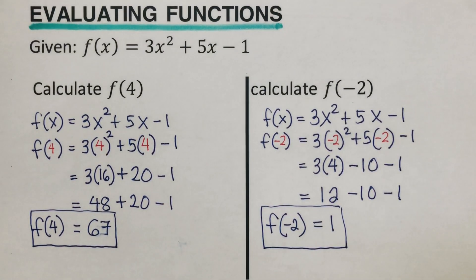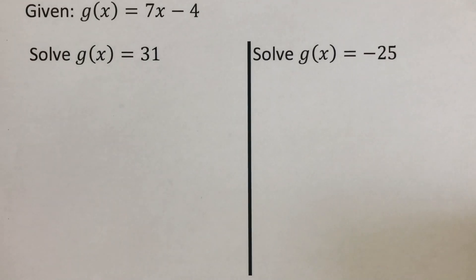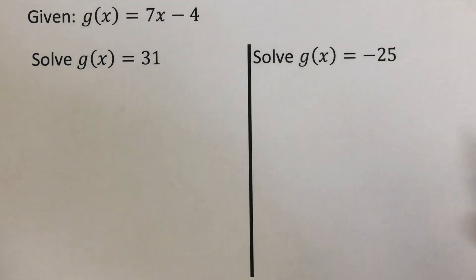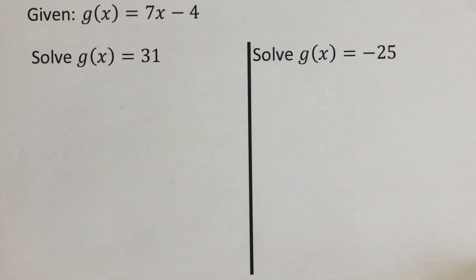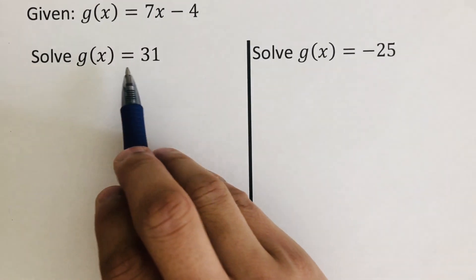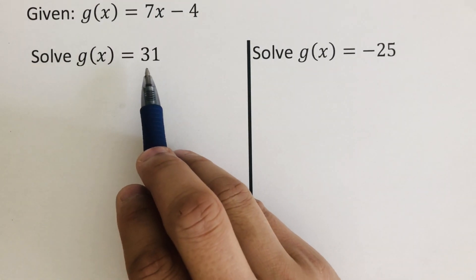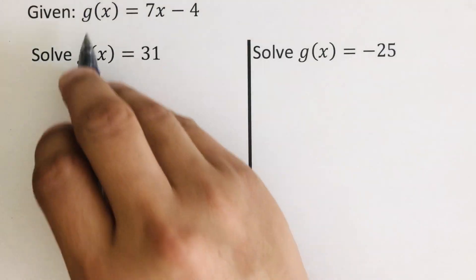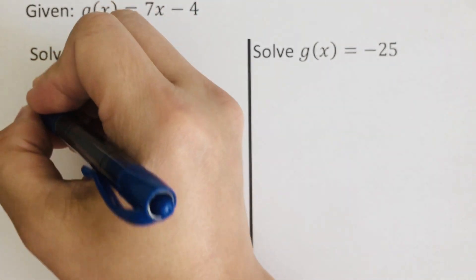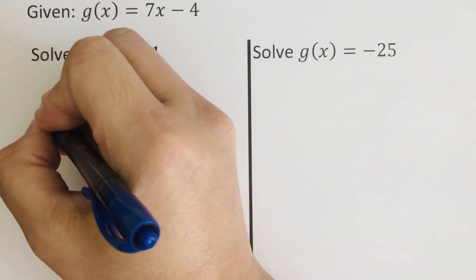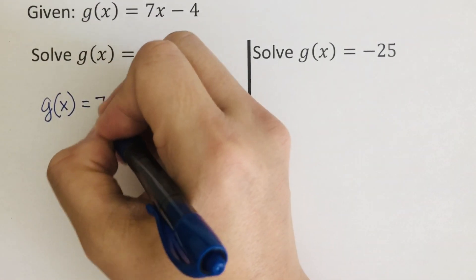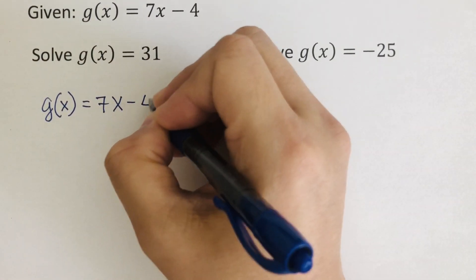Now let's move on to the next example. We are given the function g(x) = 7x − 4, and we are supposed to solve when g(x) = 31. I'll write the function: g(x) = 7x − 4.